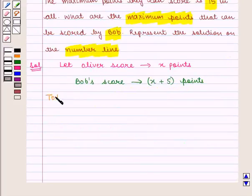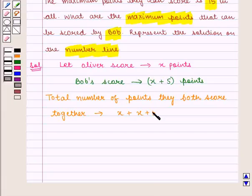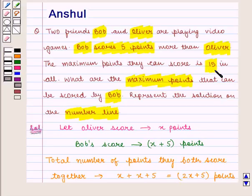Bob's score would be x plus 5 points. Now the total number of points that both scored together will be given by x plus (x plus 5), which is equal to 2x plus 5. Now according to the question, the maximum points they both can score is 15 in all. That is, their points must be less than or equal to 15 and not more than that.